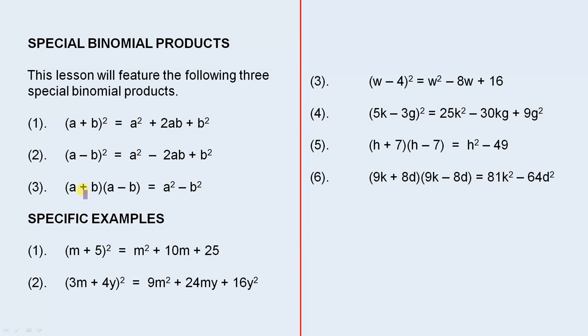And finally, here we have a special case. This is called the product of a sum and difference. That's a binomial, that's a binomial, they're multiplied together so it's a binomial product. Whenever you have that exact case there, the answer is a² - b².